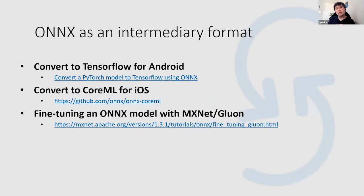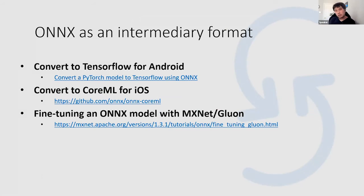With ONYX you can also use it as an intermediate format — converting a PyTorch model into a TensorFlow model using ONYX, then using it for Android. You can also convert an existing PyTorch or TensorFlow model to Core ML. There's conversion for fine-tuning too — for example, using an existing ONYX model for computer vision and doing transfer learning based from it.